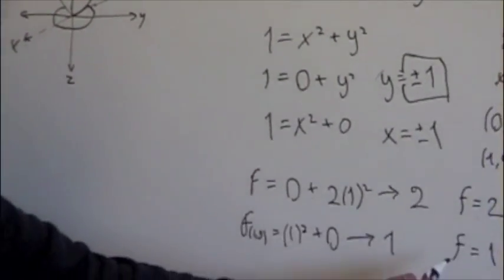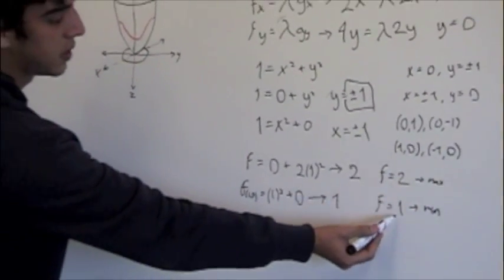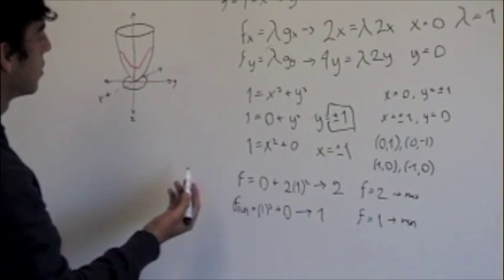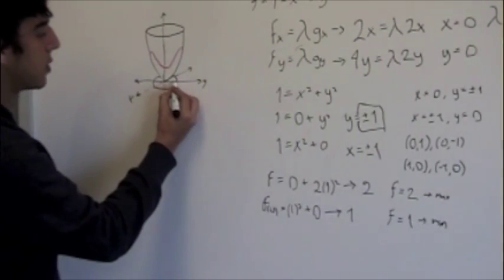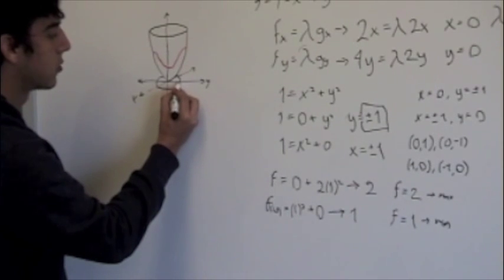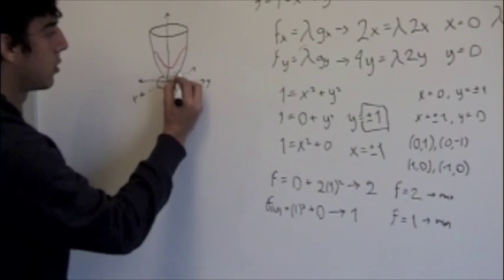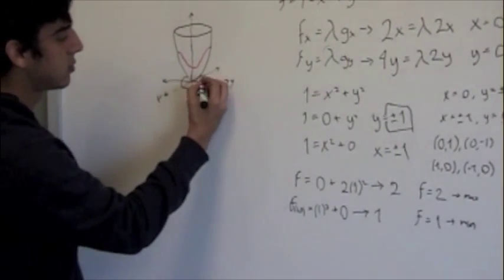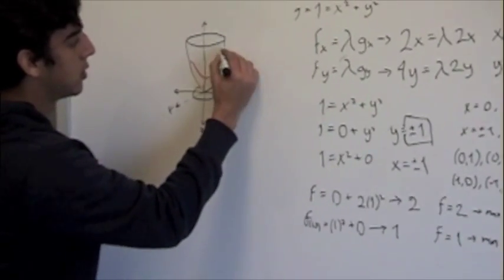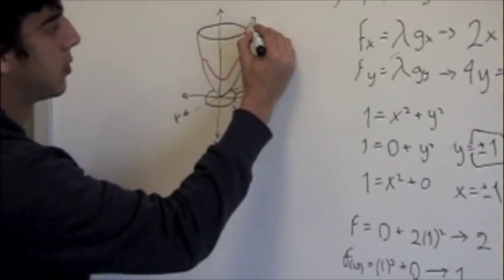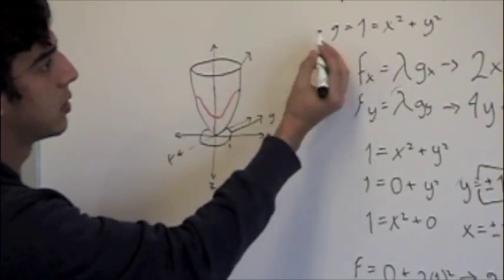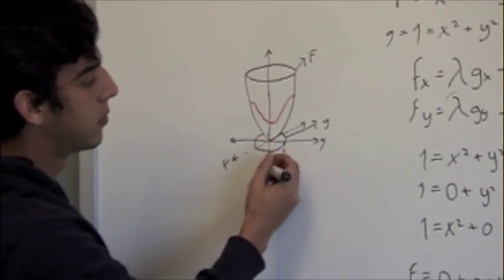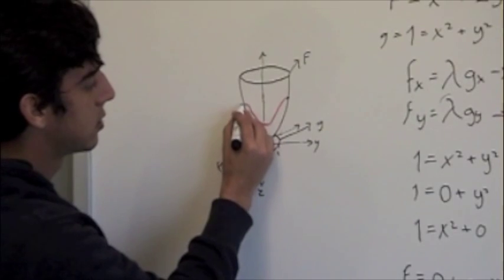As we found before, our max and min will happen at (0,1) or (0,-1), and at (1,0). Our max will happen at x = 0 and y = 1. As we can see in the graph, it's a max because this circle is our g and the elliptic paraboloid is our f. If we project this circle onto f, we're going to get these intersections at max and min.